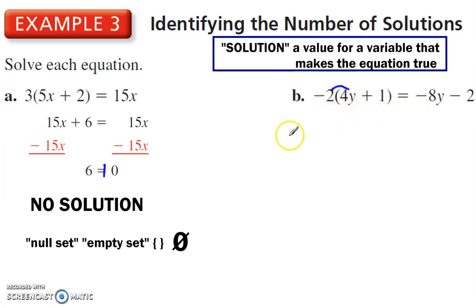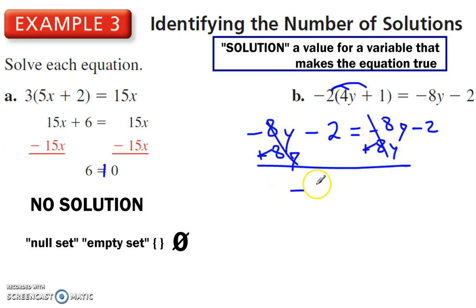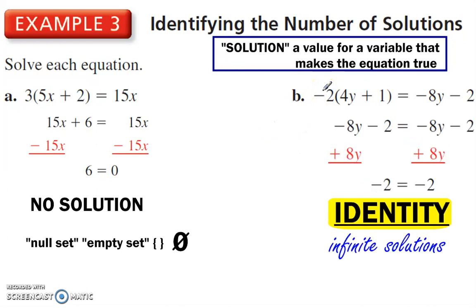Let's do this one. Negative 2 times 4y is negative 8y. Negative 2 times 1 is negative 2 equals negative 8y minus 2. You might be able to see where we're going with this. Plus 8y on each side. This cancels out and now it says negative 2 equals negative 2. This is not no solution because this statement is true. That means no matter what I plug in here for the variable, it's going to be true.